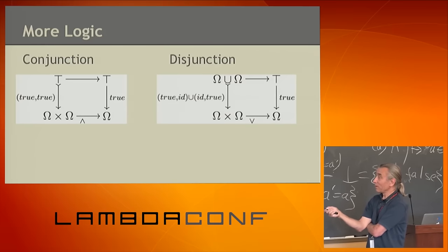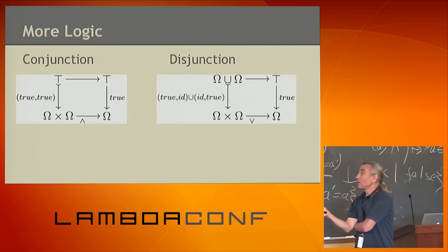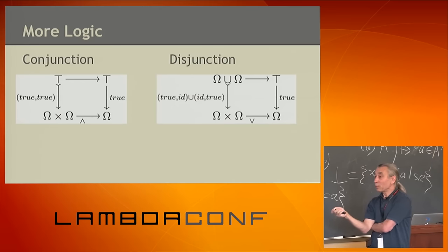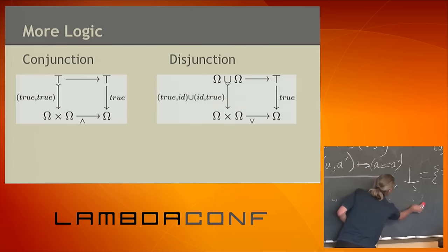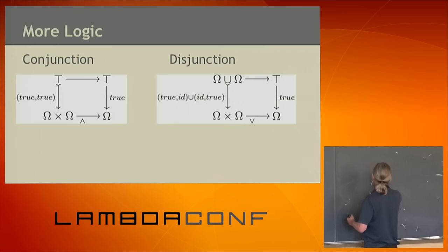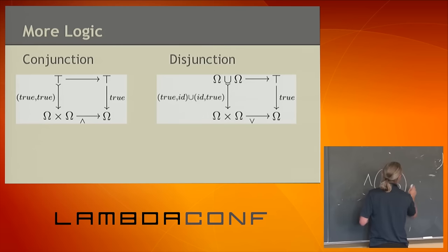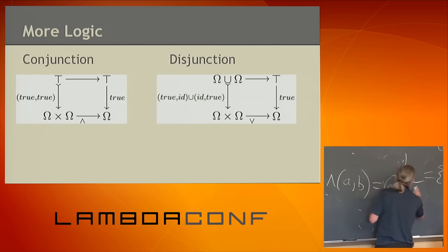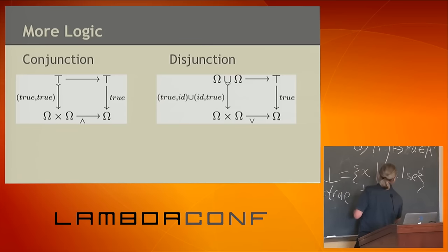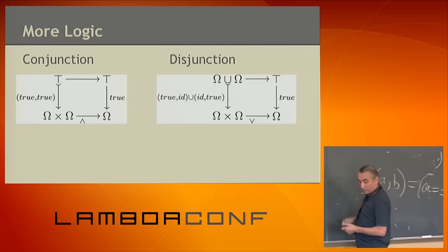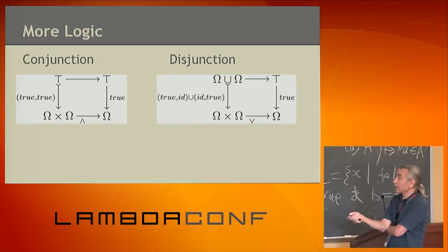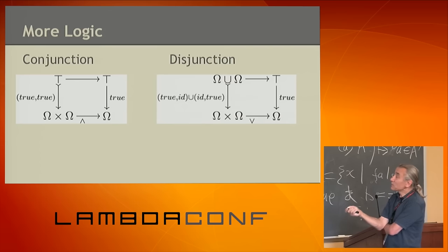First, conjunction. Given Omega cross Omega, conjunction is the classifier of the pair (true, true). What predicate classifies both components being true? It's the conjunction. That's how conjunction is defined: by just classifying a pair of truth. We already had true and false.